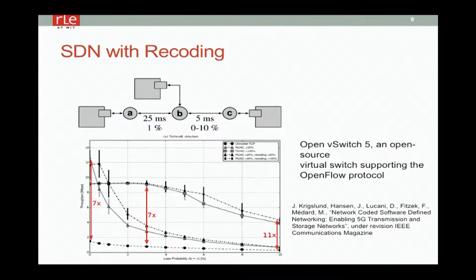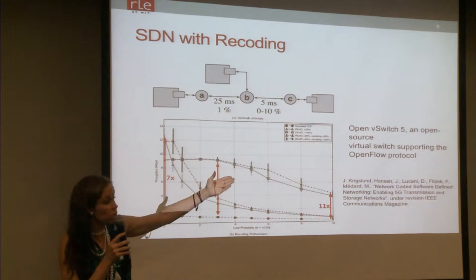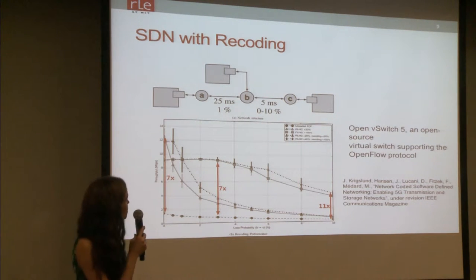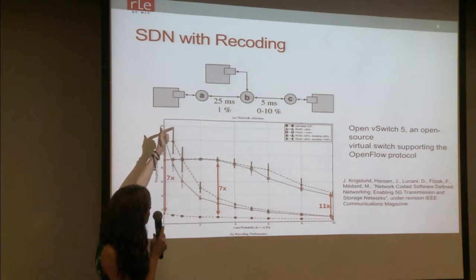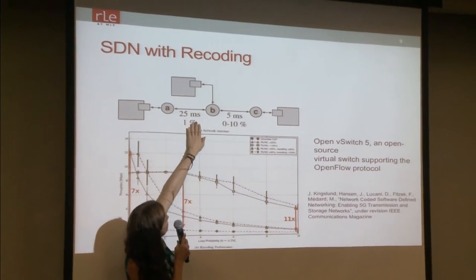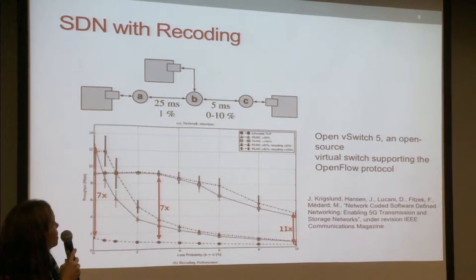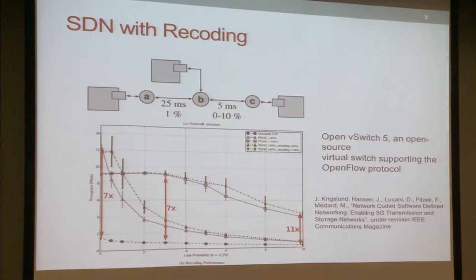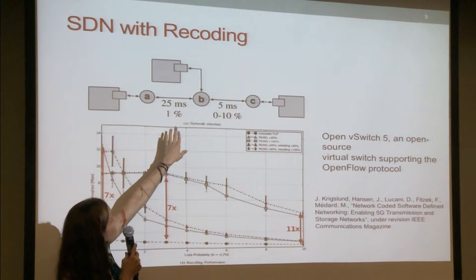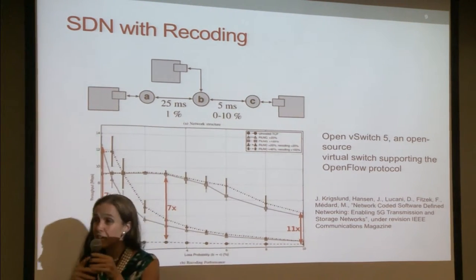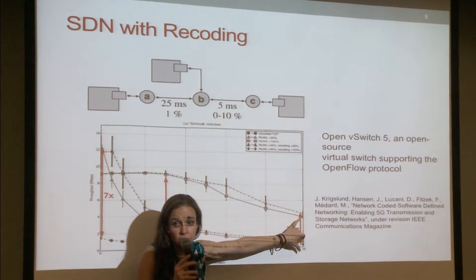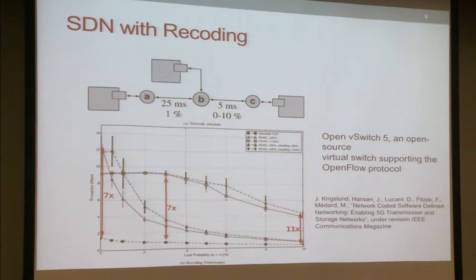This is work done with collaborators at University of Aalborg. It's an SDN using open vSwitch and open flow protocol. With uncoded TCP versus coding at the lower layer — 1% losses on the first hop and 0 to 10% losses on the second — the gains from end-to-end coding are significant. Because you have an SDN system, you can recode at intermediate nodes; the gains can be quite considerable, a factor of 10, in a way entirely transparent to the protocol.